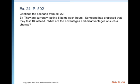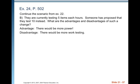They are currently testing five items each hour; someone has proposed testing 10 instead. What are the advantages and disadvantages? The advantage is more power — whenever you increase sample size, you increase power, and it also reduces both the probability of Type 1 and Type 2 error. The disadvantage is more work testing: you'd be testing twice as many items, it might cost twice as much, and you might need to hire an extra person.